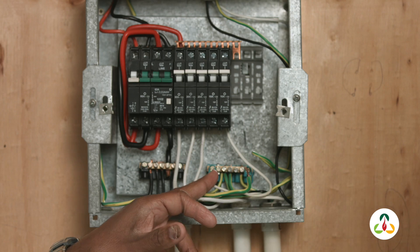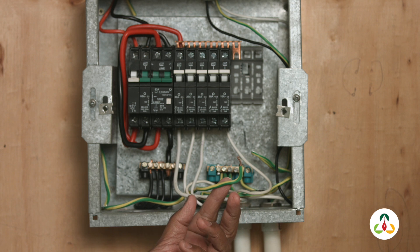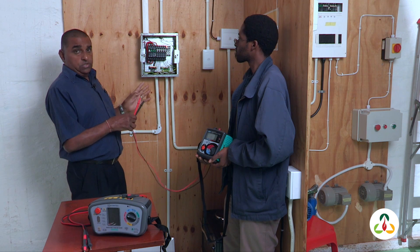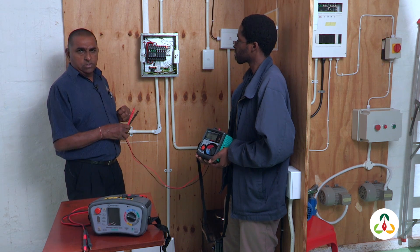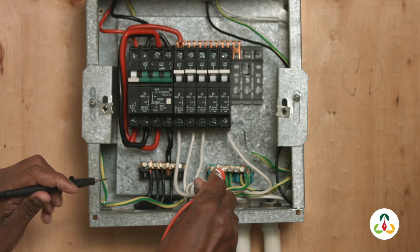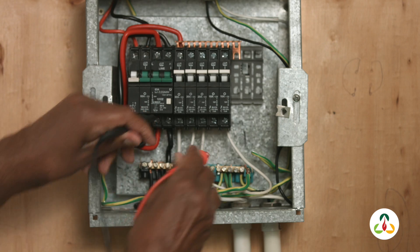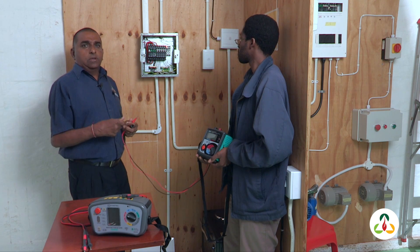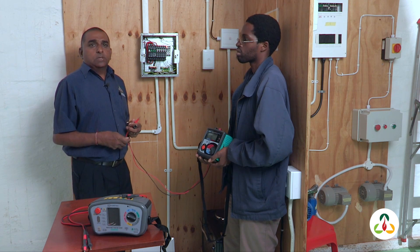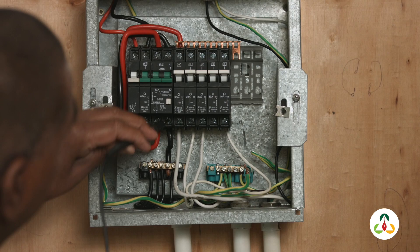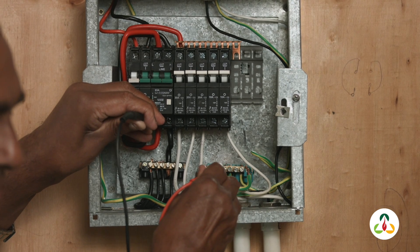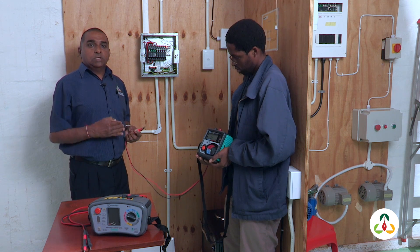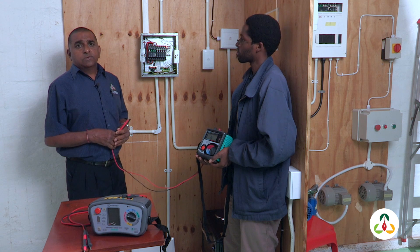Our main earth bar is indicated at the bottom here. You would have noticed that the main supply earth has been removed, as I want to test the insulation between my installation and the conductors. Testing between the live and the earth at the earth bar, my meter reading is still OL — infinity — indicating an insulation resistance higher than one mega ohm. I then test between the neutral and the earth, and once again the meter shows OL, confirming the reading is above one mega ohm. That completes the insulation resistance test.